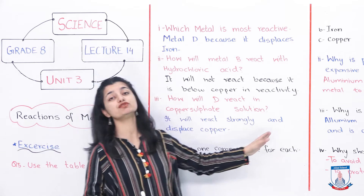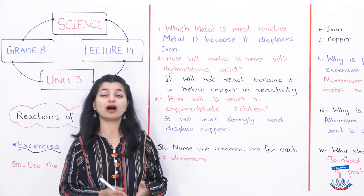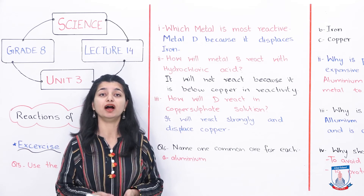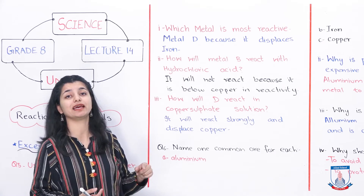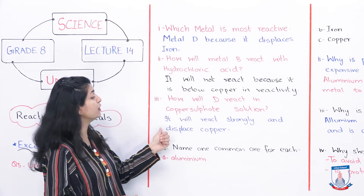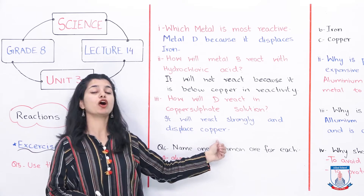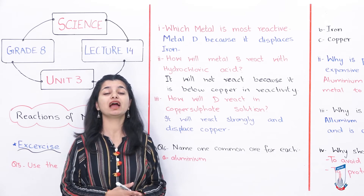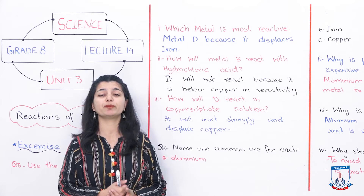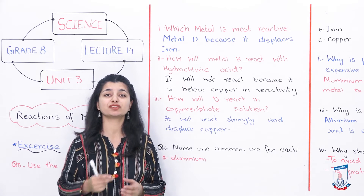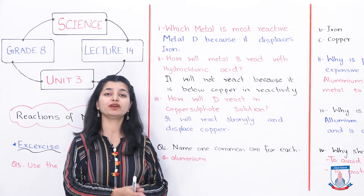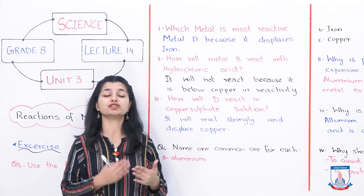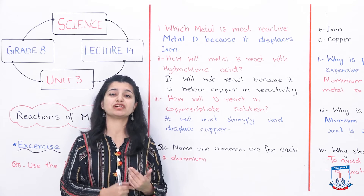Part 3 asks: how will metal D react in copper sulfate solution? Metal D is our most reactive metal — it displaces iron. So it will also react with copper sulfate and displace copper. Because it is so reactive that it replaced iron, it will obviously also displace copper. So metal D will react strongly and displace copper from copper sulfate solution. That completes question 5, where we used the information from the table to determine displacement reactions.